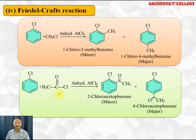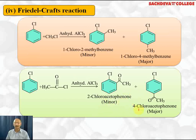Friedel-Craft acylation: chlorobenzene reacted with acetyl chloride (ethanoyl chloride) in the presence of anhydrous AlCl₃. AlCl₃ takes up Cl⁻ to form AlCl₄⁻ and an acyl carbocation, which is the electrophile attacking ortho and para positions. This gives 2-chloroacetophenone (orthochloroacetophenone) and 4-chloroacetophenone (parachloroacetophenone) as the major product. This is Friedel-Craft acylation.